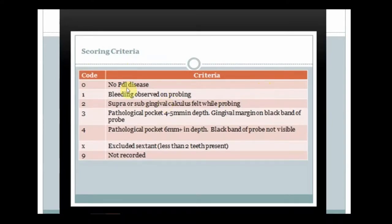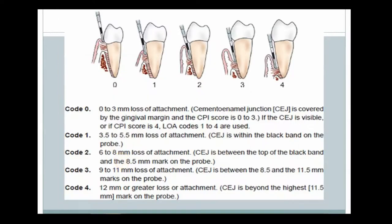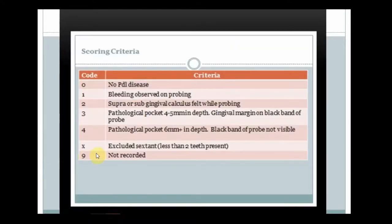CPI uses the same scoring criteria as CPITN: 0 — no problem; 1 — bleeding; 2 — calculus; 3 — pocket of 4–5 mm (gingival margin within the black band); 4 — black band not visible, pocket of 6 mm or more; X — excluded sextant; 9 — not recorded. Loss of attachment assessment is conducted when the CEJ is visible or when the CPI score is at least 4.